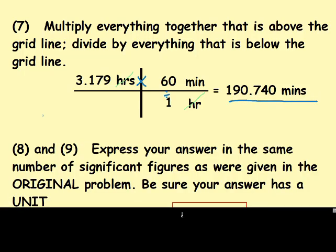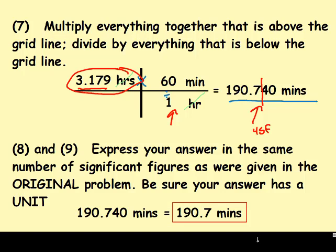Finally, express your answer in the same number of sig figs as you were given in the original problem. Make sure that your answer has a unit. This was my original number. I do not look at these for sig figs because that's a conversion factor which means they have an infinite number of sig figs. So I had 4 sig figs so I need this number in 4 sig figs. I had 1, 2, 3, 4. That 7 is not going to round up due to a 4. So my final answer is 190.7 minutes.